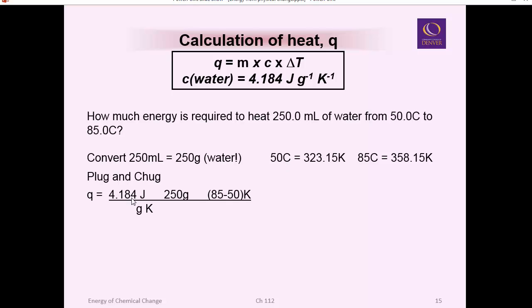4.184 is the specific heat unit. Look how I stack this in here with joules per gram Kelvin times the mass, 250 G. Temperature change, 85 minus 50 is 35. Now you just cancel out all your units and you solve, and you basically get 3.66 times 10 to the 4th joules. That's your answer. That's how many joules of energy it would take to heat 250 mils of water from 50 C to 85 C.